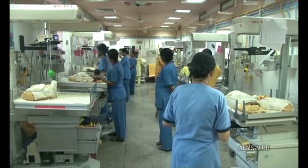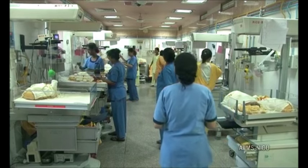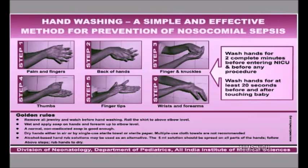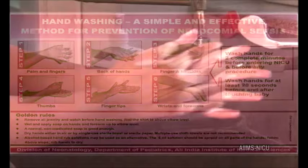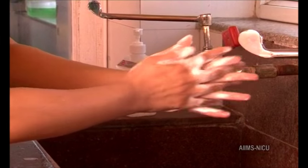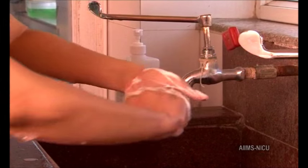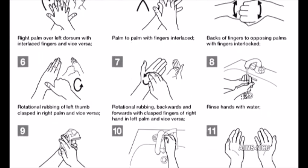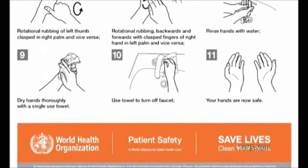In any health facility, sepsis is the most important cause of neonatal death. Hand washing should be done for at least 2 minutes before entering the unit, and for 20 seconds before and after touching any patient. Hand washing is also to be done before and after touching any unsterile surface and fomites. According to WHO recommendation, hand hygiene with soap and water should be done for 40–60 seconds.